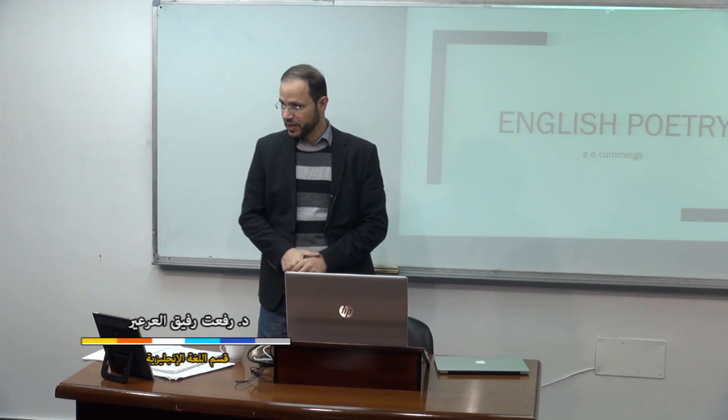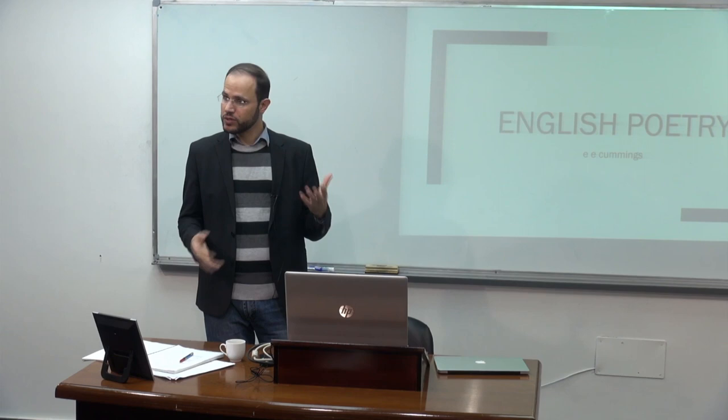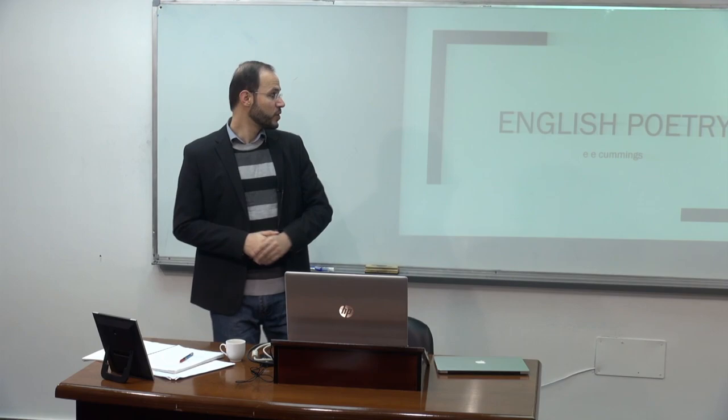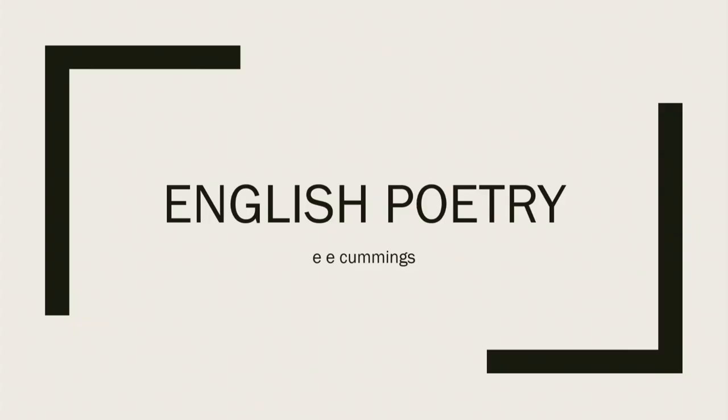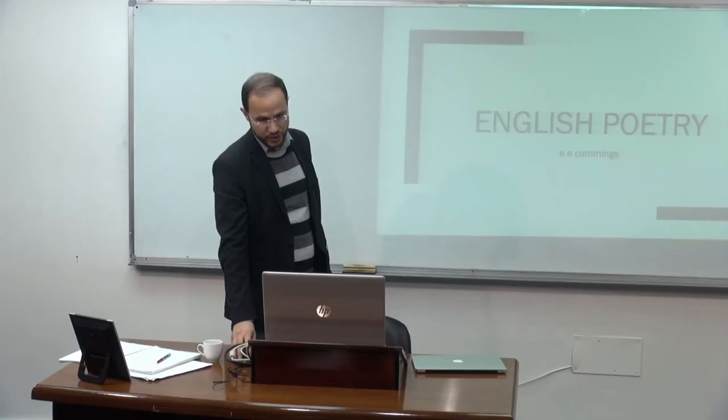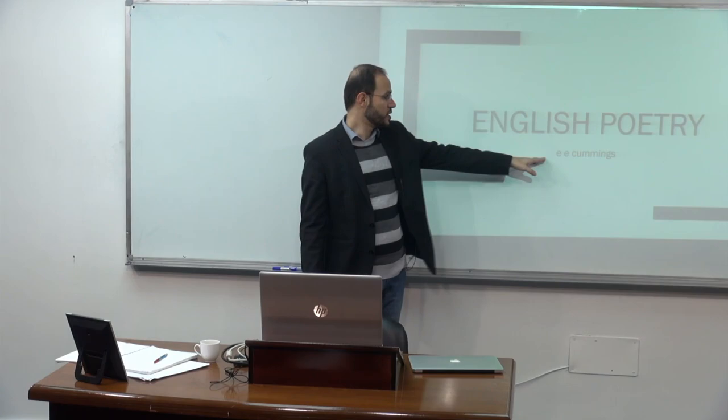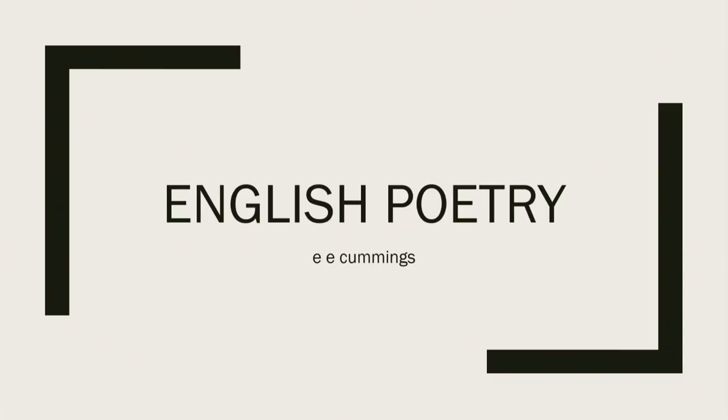As-salamu alaykum and welcome back to English Poetry. We have a very interesting poet and a very interesting poem today. We agree that this is an English poetry course, so we're sticking with English poetry, but we're adding some Palestinian and Israeli poetry. This one here is probably the last poem originally written in English. It's by an American poet — his name is E.E. Cummings. Sometimes his name is written in small letters, no capital letters.